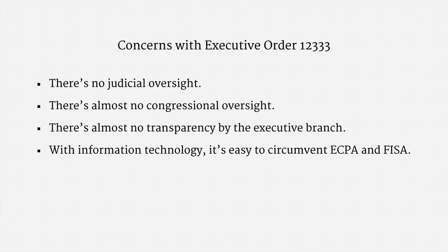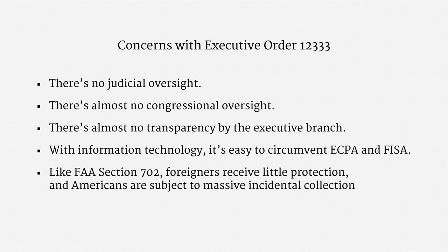For instance, instead of collecting transatlantic internet traffic in the United States, the NSA can partner with the GCHQ in the United Kingdom. The NSA receives the exact same information, but it's subject to a very different set of legal protections. Finally, the same objections to Section 702 of the FISA Amendments Act have been raised for Executive Order 12333: foreign individuals and businesses receive little protection, and Americans are subject to massive incidental collection.